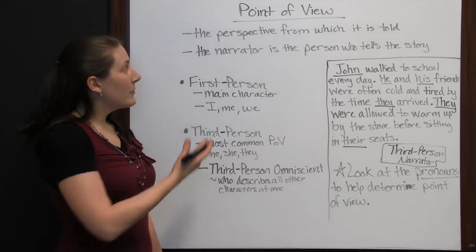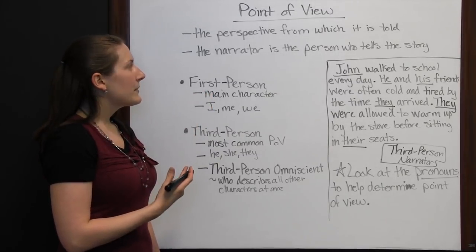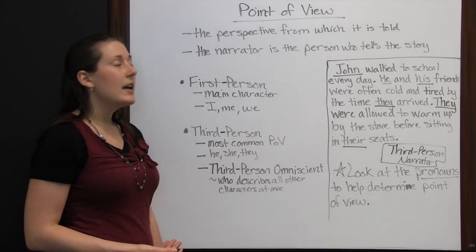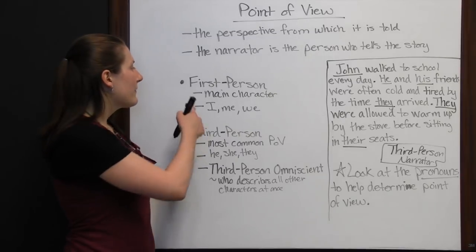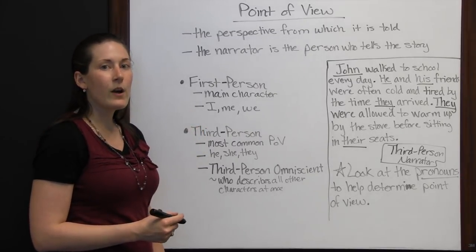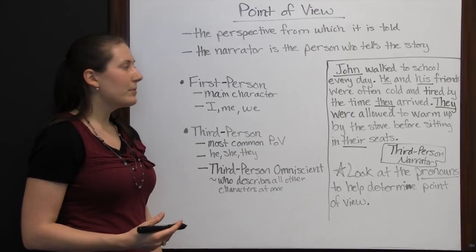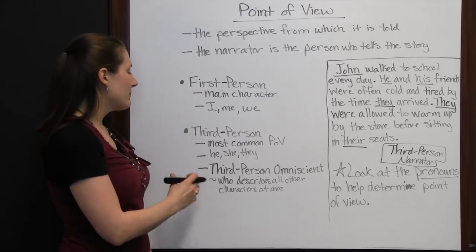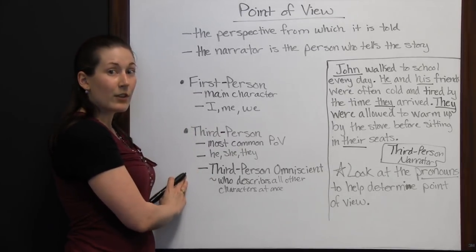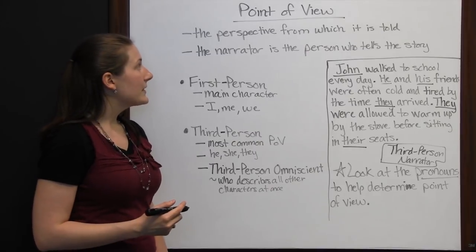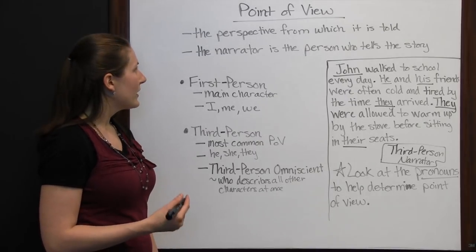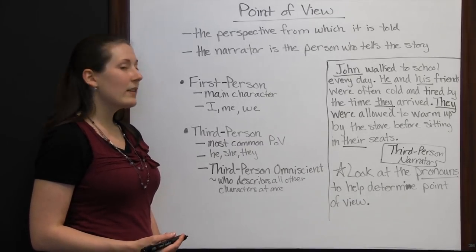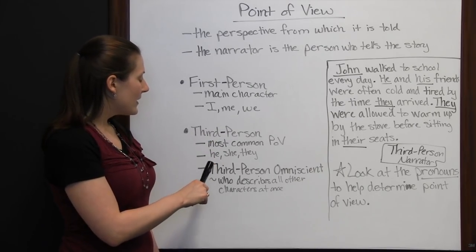Whenever you're going to find point of view, you want to know this because the perspective of the story — who it's coming from — is important. First-person gives you more intimate information since it's coming from a certain character. Third person gives you a greater variety of information. It's always important to determine your point of view whenever you're reading a story. The best way to find it is by looking at the pronouns: 'I,' 'me,' and 'we' for first person; 'he,' 'she,' and 'they' for third person.